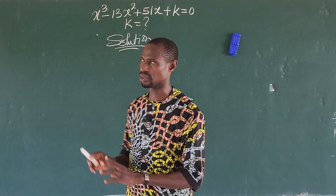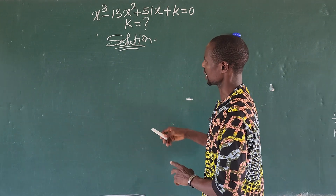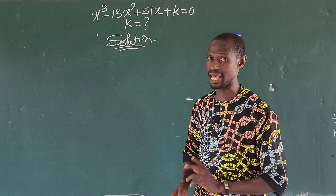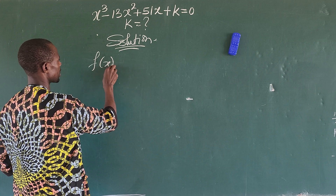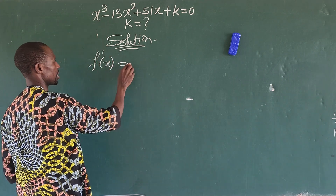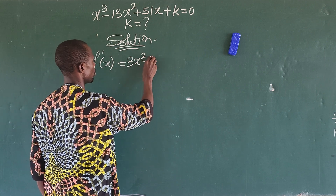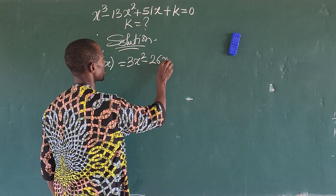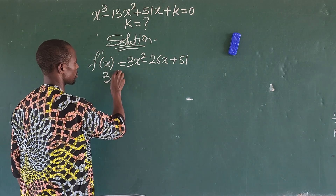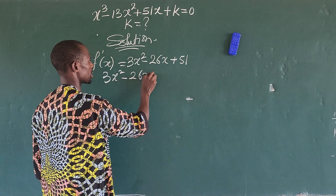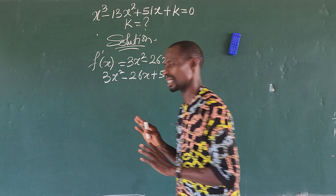So the first thing we do here is differentiate this function, because k here is a constant. If it is a constant, we can differentiate with respect to x. So differentiating, we have f'(x) — this gives us 3x to the power of 2 minus 26x plus 51. So we now have 3x squared minus 26x plus 51 equals 0. This is a quadratic equation.